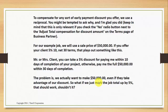Mr. or Mrs. Client, you can take a 5% discount for paying me within 10 days of completion of your project. Otherwise, pay me the full $50,000 within 30 days of completion. The problem is we actually want to make $50,000 even if they take advantage of our discount. So what if we just mark the job total up by 5%? That should work, shouldn't it?